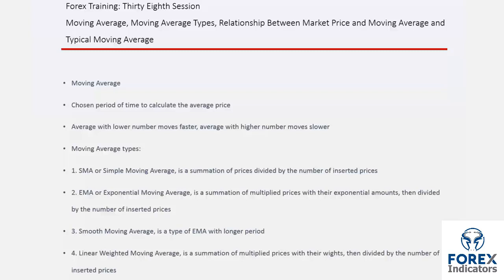EMA, or exponential moving average, can be calculated by the summation of each price data multiplied by its exponential amount and divided by the number of data inserted. It is classified by considering the importance of each data based on its novelty — the latest data has a more significant effect on the market compared to earlier data. It has more rapid movement than the SMA.